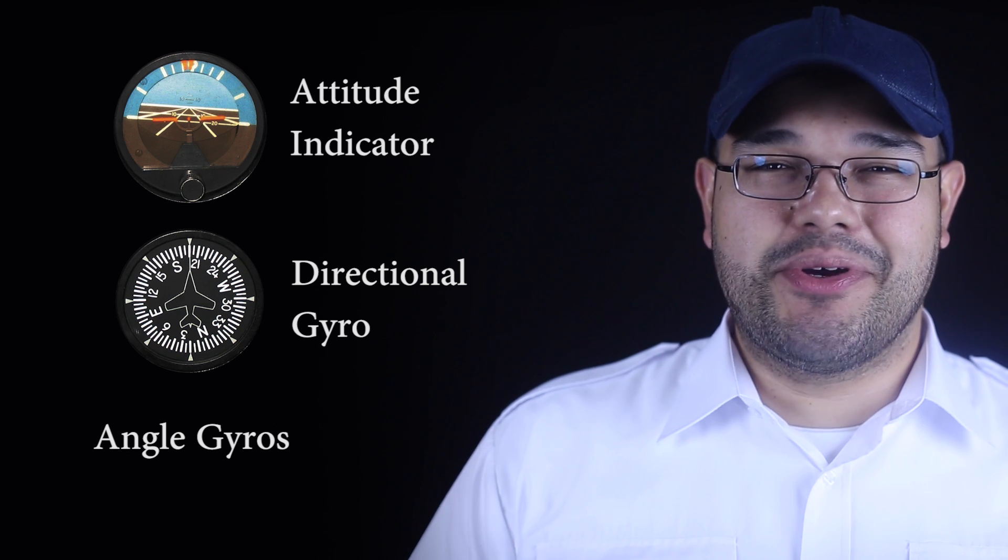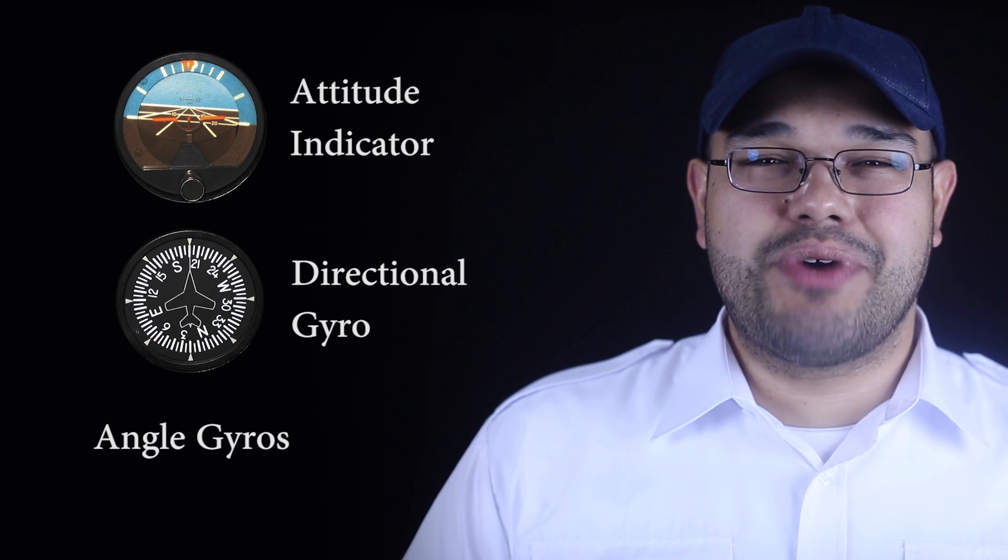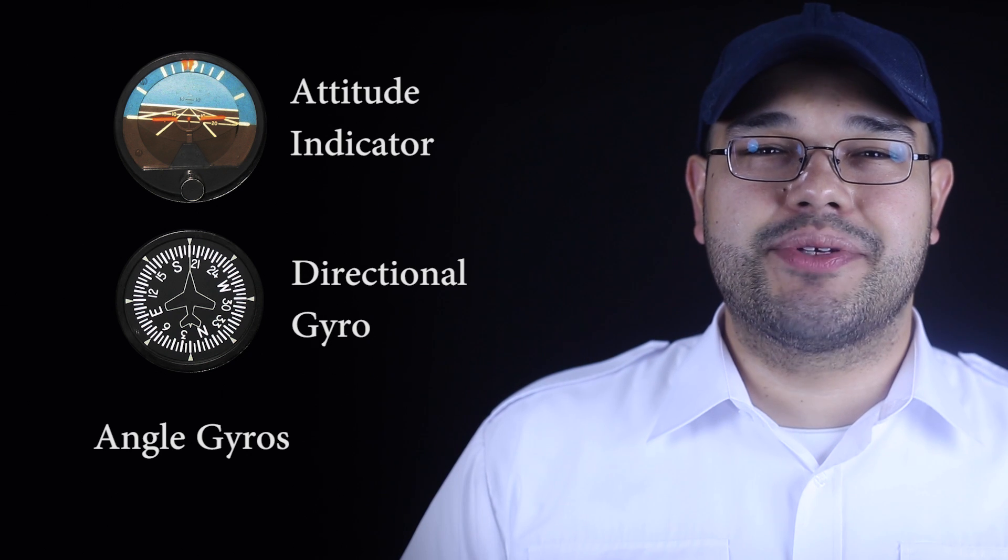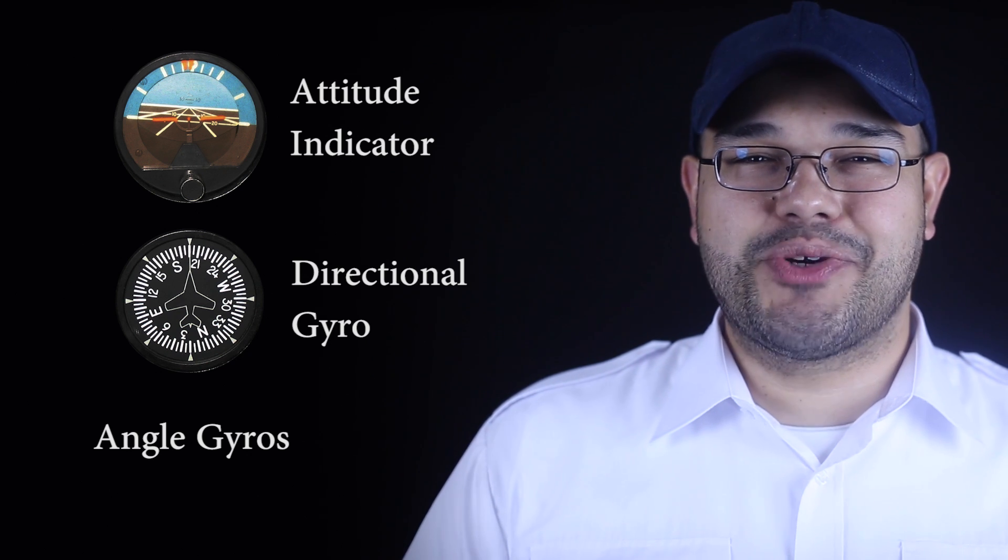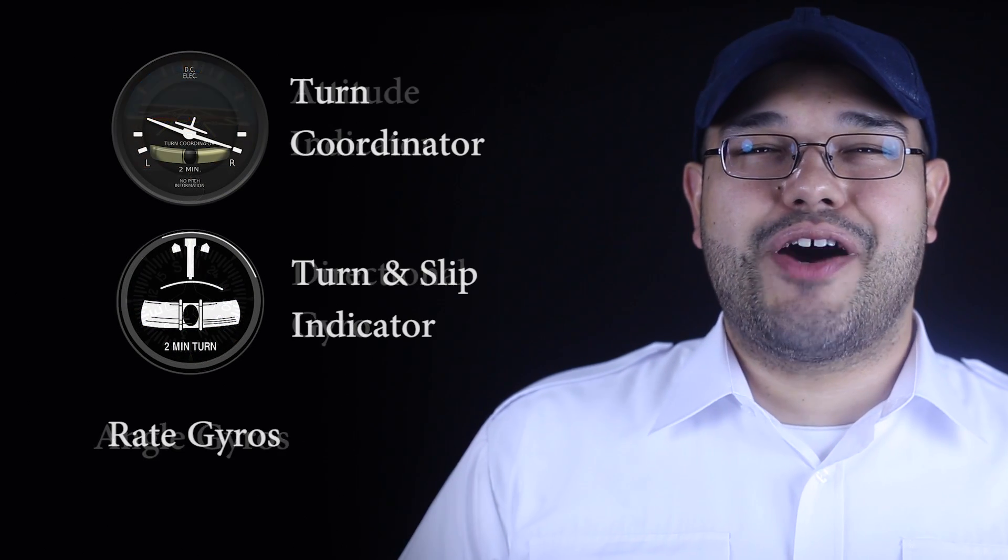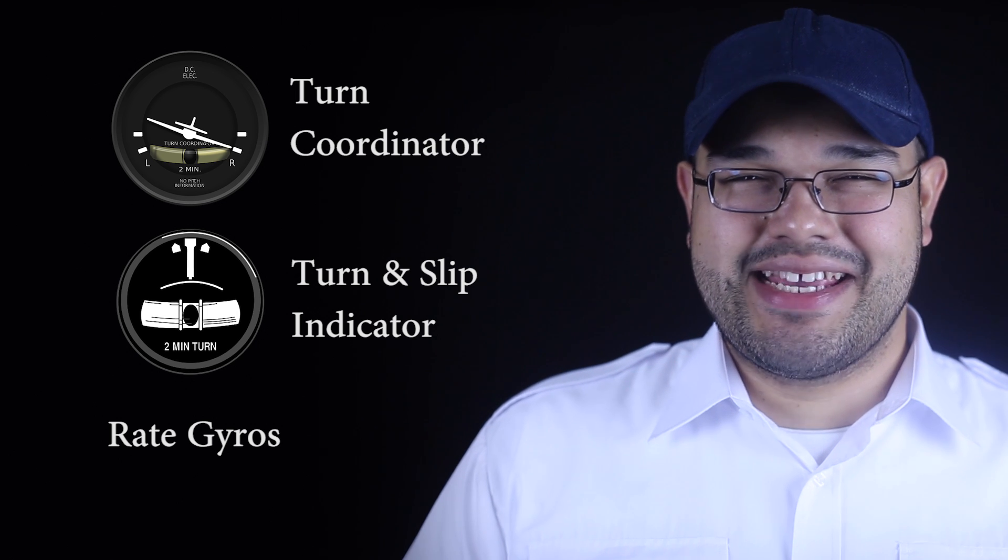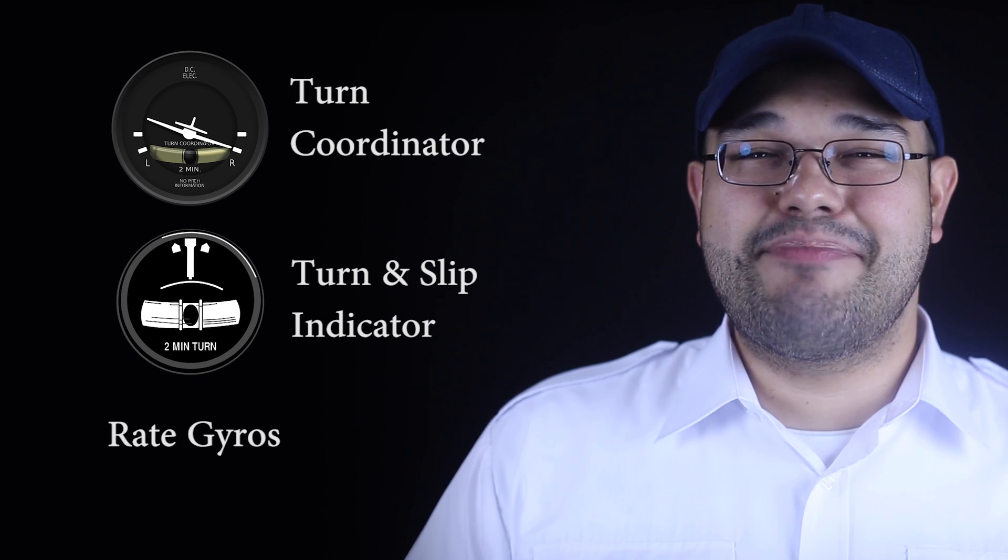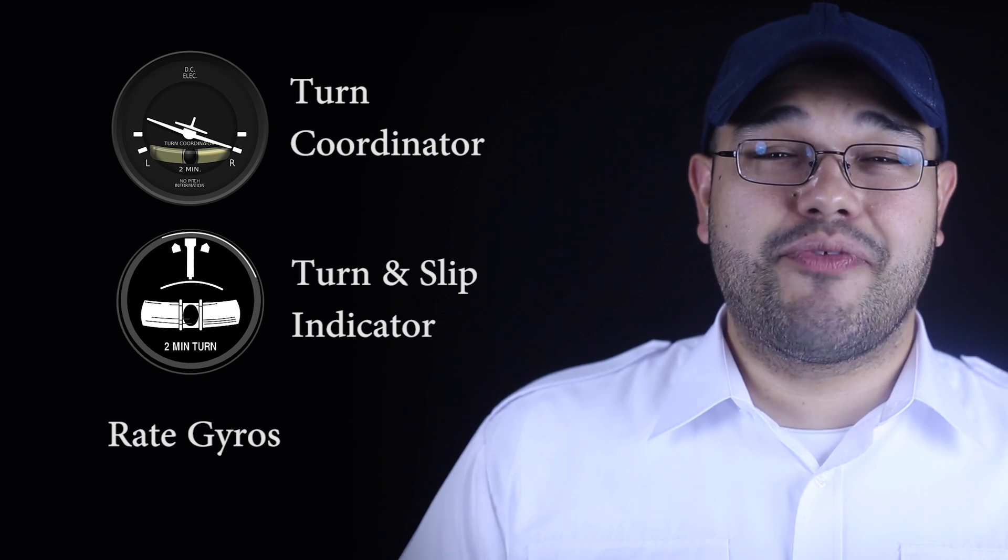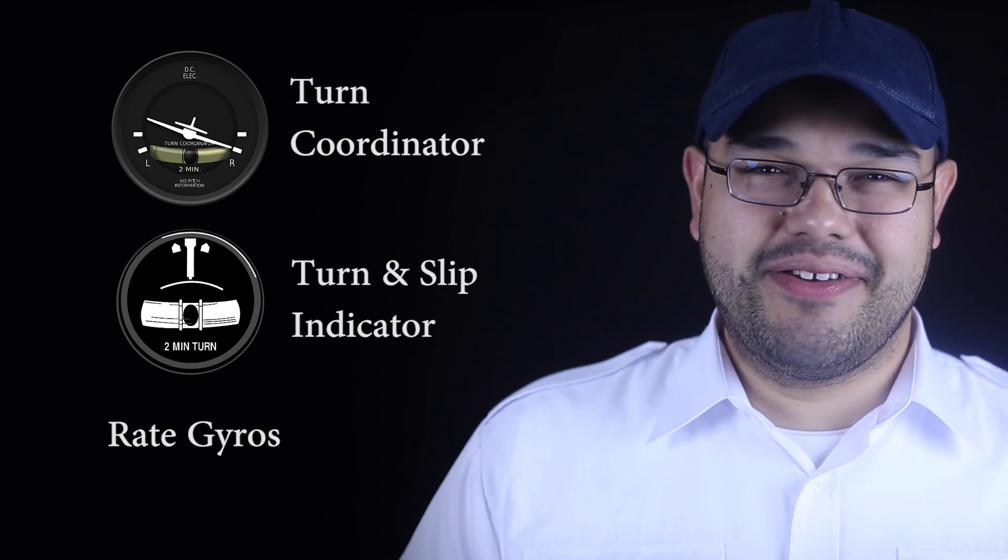Both angle and rate gyros are used in aircraft instrumentation to provide reference information. As for flight instruments that use gyros, the attitude indicator and directional gyros use angle gyros to provide orientation and direction information. Also, the turn coordinator and the turn and slip indicator use rate gyros to provide rate of turn information.